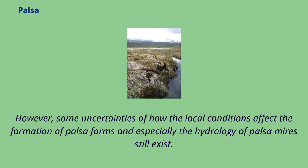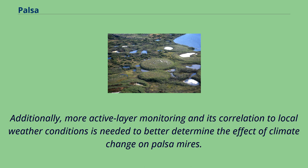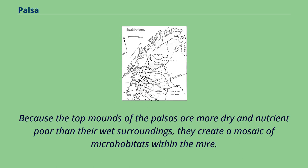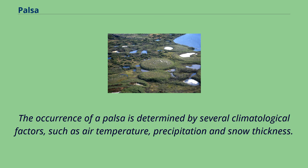However, some uncertainties of how the local conditions affect the formation of palsa forms, and especially the hydrology of palsa mires, still exist. Additionally, more active layer monitoring and its correlation to local weather conditions is needed to better determine the effect of climate change on palsa mires. Because the top mounds of the palsas are more dry and nutrient poor than their wet surroundings, they create a mosaic of microhabitats within the mire. The occurrence of a palsa is determined by several climatological factors, such as air temperature, precipitation, and snow thickness.